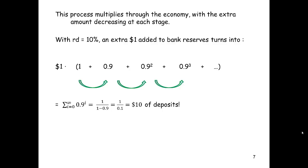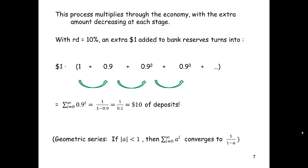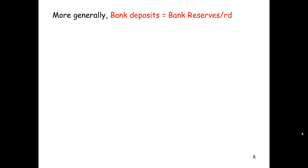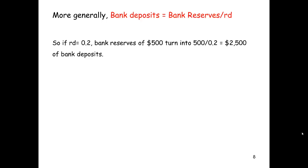How do we figure out that that infinite sum equals $10? This is just a geometric series. If the absolute value of a is less than 1, then the sum from i=0 to infinity of a^i converges to 1/(1−a). In this case, our a was 0.9. More generally, bank deposits equal bank reserves divided by the reserve deposit ratio. So if the reserve deposit ratio were 0.2 (20%), bank reserves of $500 turn into $500 / 0.2 = $2,500 of bank deposits.